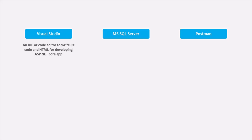We are going to use Visual Studio as an IDE for writing ASP.NET Core code — specifically C# and HTML code. Instead of Visual Studio, you can also use other code editors like Visual Studio Code, Atom, or Sublime. With ASP.NET Core, it is not mandatory to use Visual Studio; you can also use other code editors.